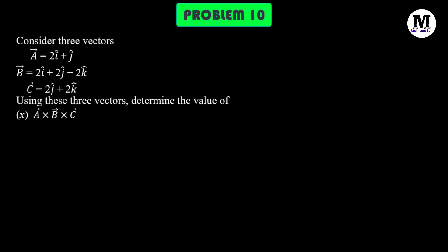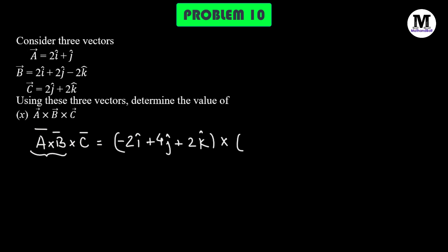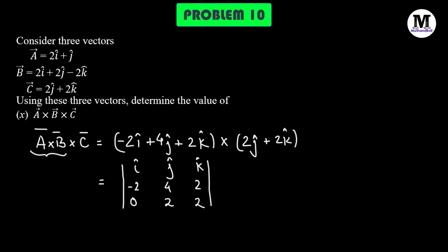Problem number 10: we need to find the vector triple product A cross B cross C. We already found the value of A cross B, which is negative 2i cap plus 4j cap plus 2k cap. That will be crossed with C vector, which is 2j cap plus 2k cap. Using the determinant form with i cap, j cap, k cap in the first row; negative 2, 4, 2 as the components of A cross B in the second row; and the components of C in the third row. Solving this, we get 4i cap plus 4j cap minus 4k cap.